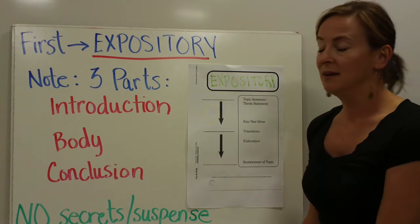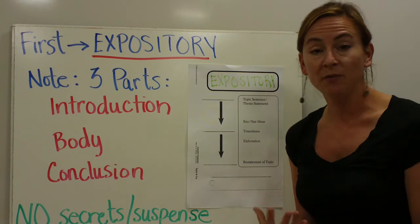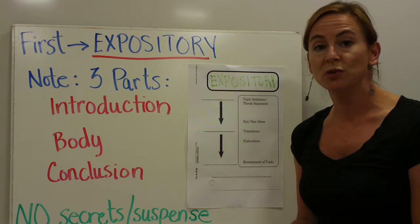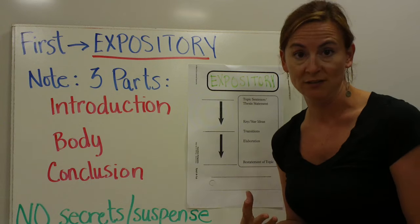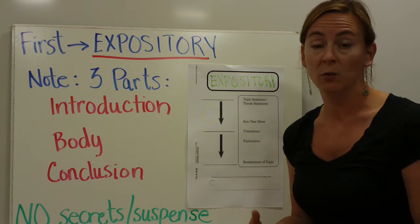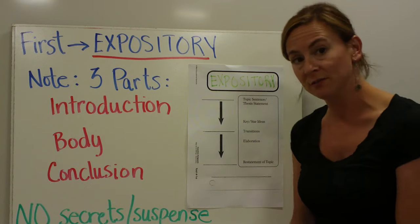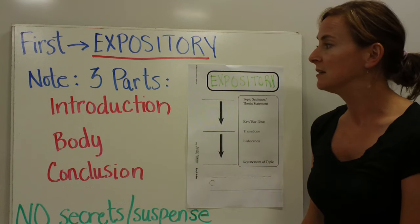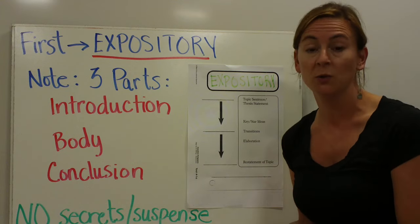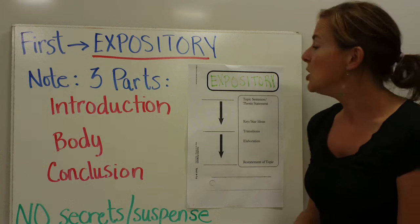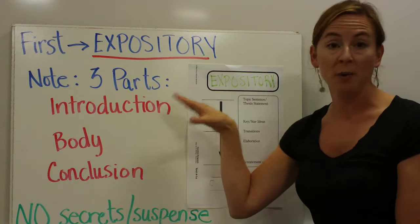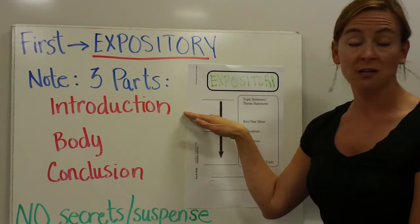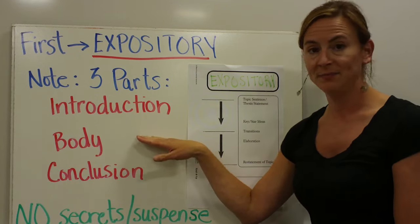Expository writing is the type of writing that is used to give us information, nonfiction or real true information. When you write an expository piece or you read an expository piece, you will notice that there are three parts: the introduction, the body, and the conclusion.